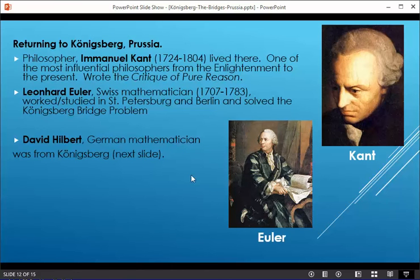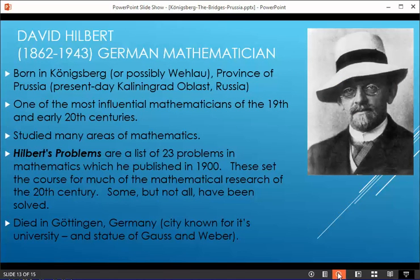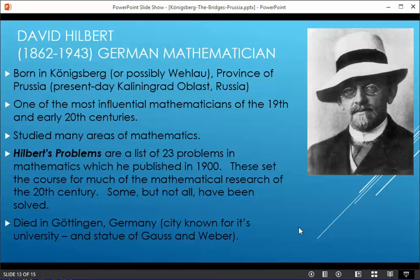I want to take a quick look at David Hilbert. David Hilbert lived in the 1800s and early 1900s and was born in Königsberg — a very influential mathematician of the 19th and 20th centuries. He studied many areas of mathematics. One notable thing about Hilbert is he made a list of 23 problems published in the year 1900, the turn of the century, which set the course for much of mathematical research in the 20th century. Some of these problems have been solved, but some have not. Hilbert died in Göttingen, Germany, mainly known for the wonderful university there and the statue of Frederick Gauss and Weber.